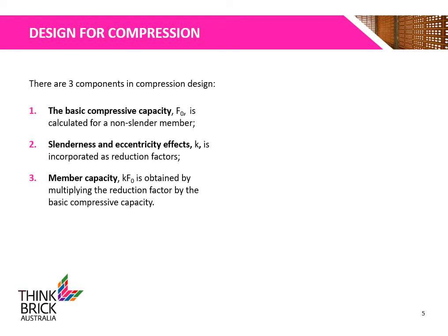There are three components when it comes to compression design. The basic compressive capacity, F0, is calculated for a non-slender member. The slenderness and eccentricity effects, K, are incorporated as reduction factors. Finally, the member capacity, KF0, is obtained by multiplying the reduction factor by the basic compressive capacity.